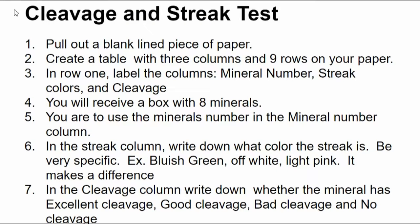So what you're going to do today is you're going to pull out a blank lined piece of paper. Make sure you put your name on it. You're going to create your own table. It's going to have three columns and nine rows on it. Remember, columns are up and down and rows are right and left. In row one, you're going to label the columns with these labels. Column one will be labeled mineral number. Column two will be labeled streak colors. And column three will be labeled cleavage. You're going to receive a box of eight minerals. You're going to use the minerals number in the mineral number column. So, for example, if you have mineral 75, that's what you're going to put there. Don't just number it one through six, please.